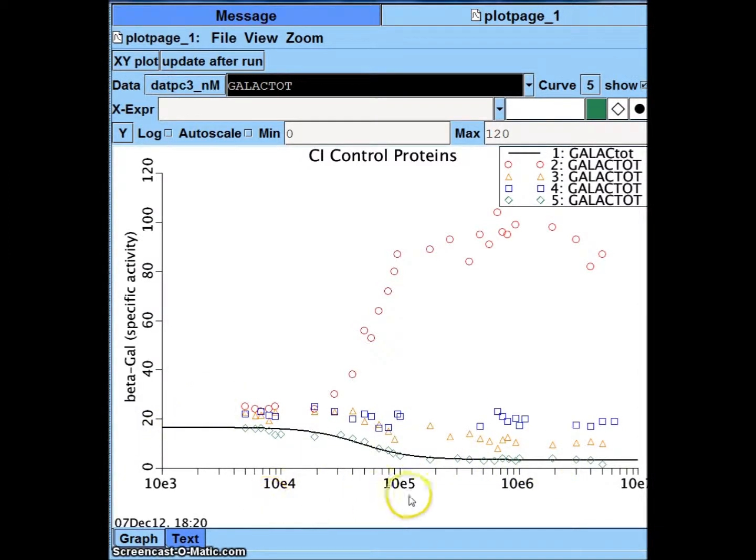Again, there's IPTG on this x-axis, though here it's in nanomoles rather than in molar form. So it's nanomoles rather than moles per liter. And on this axis, we've got beta-galactosidase production.